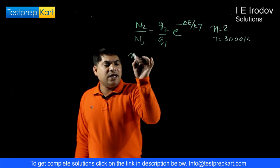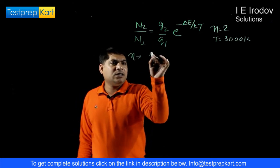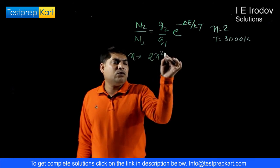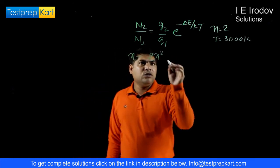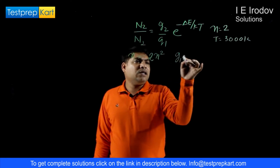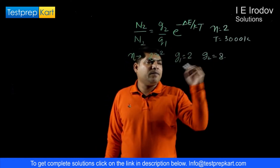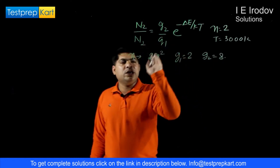For any nth orbital, nth quantum number, degeneracies can be calculated as 2 times n square. So if we take ground state n equals 1, then G1 equals 2 and G2 equals 2 n square, that is 8. So degeneracies are known here.